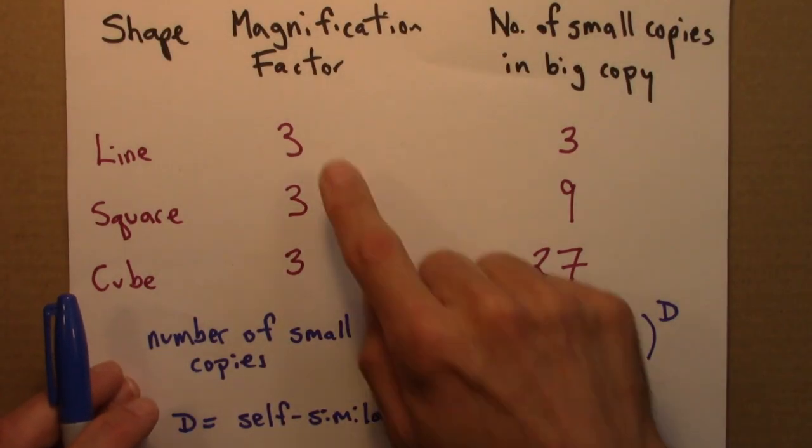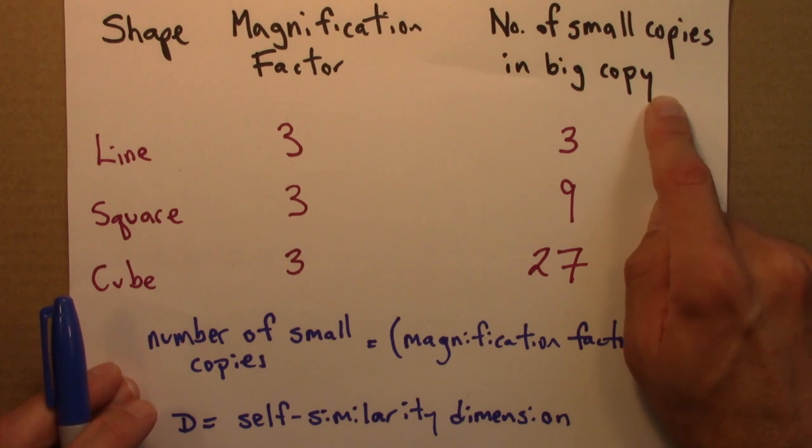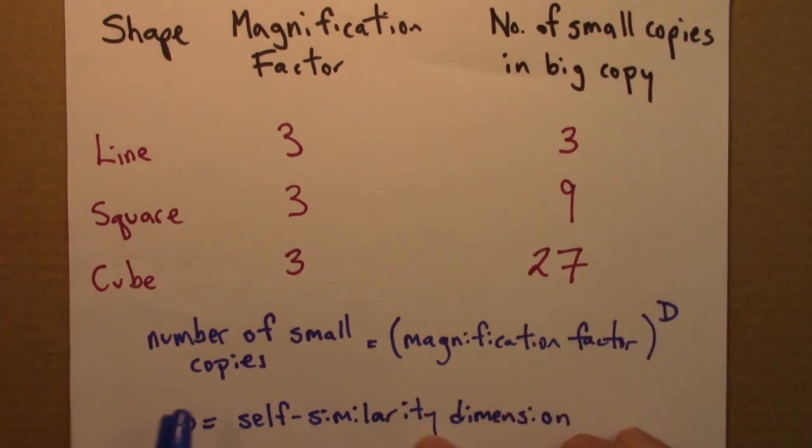So here's an equation that relates magnification factor to the number of small copies in a big copy of a shape. So the equation is that the number of small copies equals the magnification factor raised to the d power. And d in this equation is the self-similarity dimension. And I'll just call it the dimension for short now since there's no other dimension around to be thinking about.